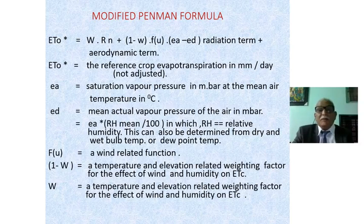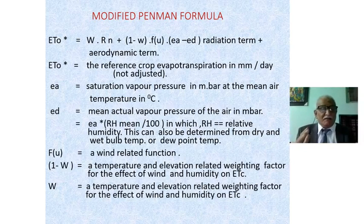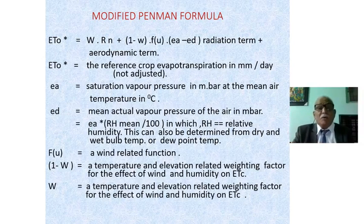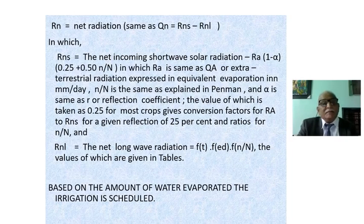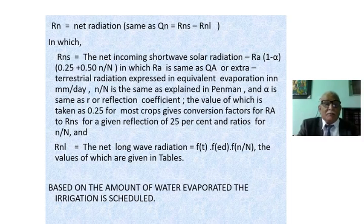As far as the modified Penman formula is concerned, we have discussed it at least twice. I do not want to go through it again in detail, but I would like to impress upon you that it has both aerodynamic and radiation components. Net radiation RN equals RNS minus RNL, where RNS is the net incoming shortwave solar radiation and RNL is the net outgoing longwave radiation. This is what we learned in the modified Penman equation.